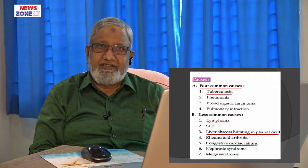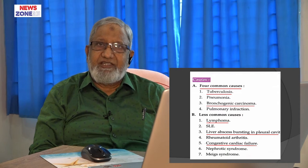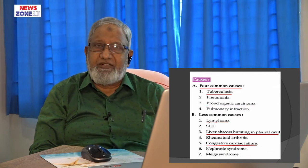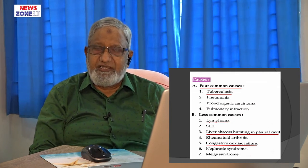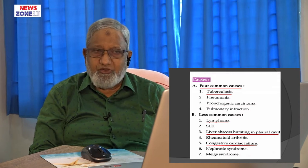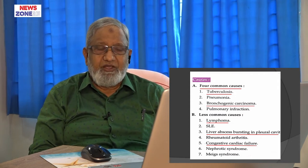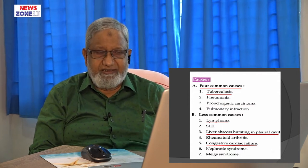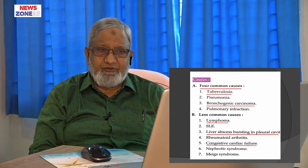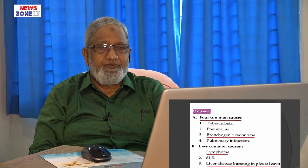Right now the whole world is suffering from coronavirus. The lung problem is due to pulmonary infarction. Why does infarction occur? You know in general pathology — infarction is localised abnormal or sudden occlusion of vessels, most commonly due to thrombus or embolism. Other common causes are lymphoma, SLE. If there is a liver abscess that bursts into the pleural cavity, it may also cause congestive cardiac failure as a cause of pleural effusions.